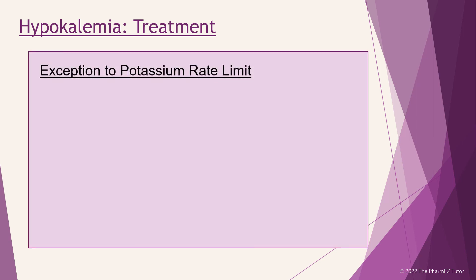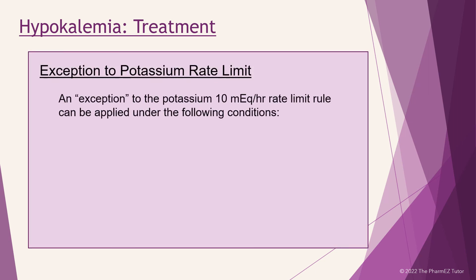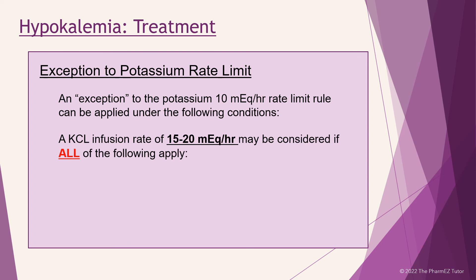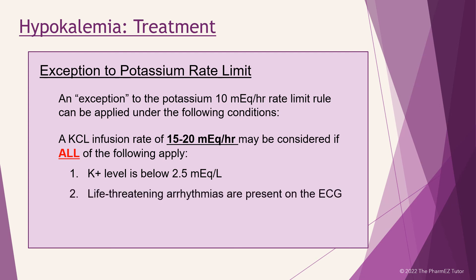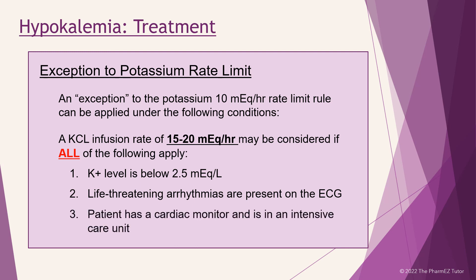An exception to the 10 MEQs per hour rate limit rule can be applied under the following conditions. A KCl infusion rate of 15 to 20 MEQs per hour may be considered if all of the following apply: the patient's potassium level must be below 2.5 MEQs per liter, life-threatening arrhythmias must be present on the ECG, and the patient must have a cardiac monitor and be in an intensive care unit.